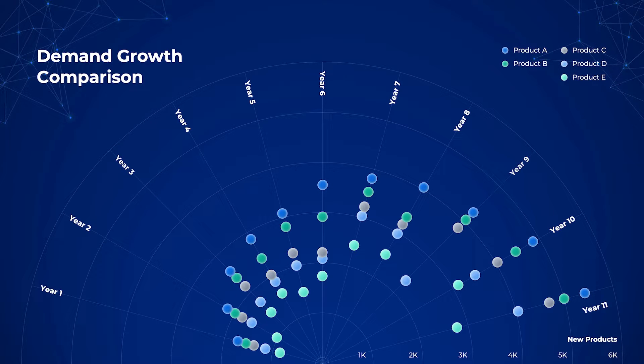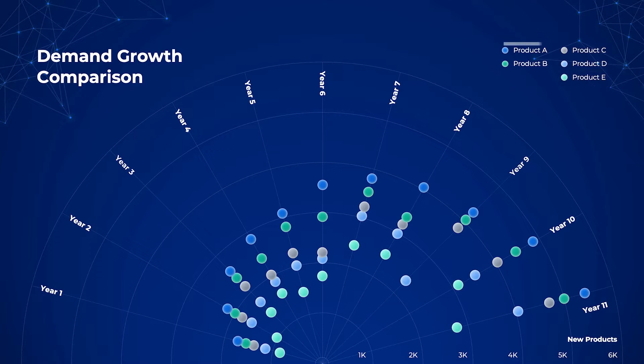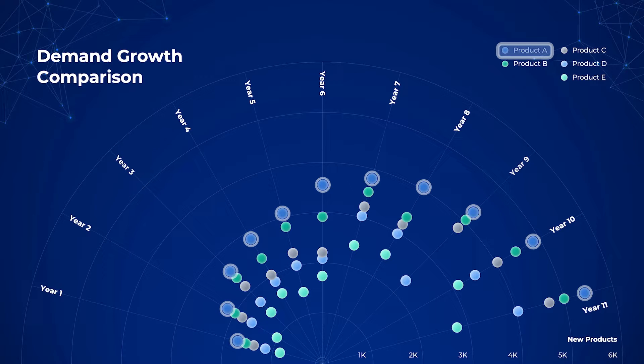This means that product E has consistently been the least popular one. On the other hand, product A takes the crown by winning the hearts of consumers.